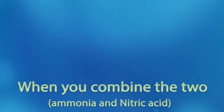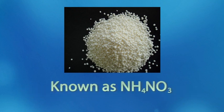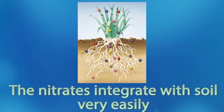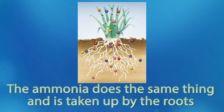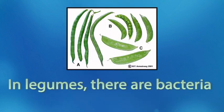When you combine the two, you get ammonium nitrate — known as NH4NO3 — an alternative to urea as a fertiliser. Nitrates integrate with soil very easily, and the ammonia does the same thing, taken up by the roots.